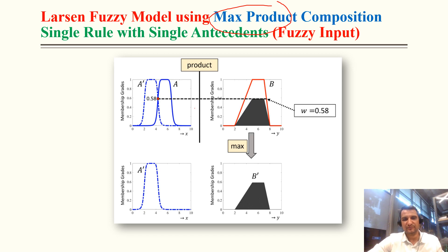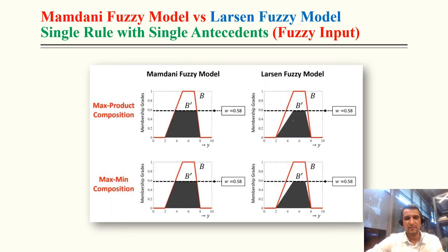For single rule with single antecedent using max-product: there is only one rule, so we cannot distinguish max from product. The degree of compatibility is 0.58, and we simply scale down the output.